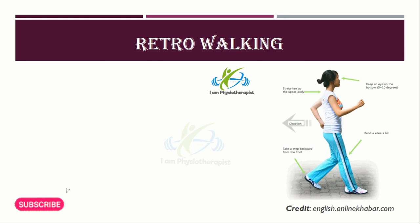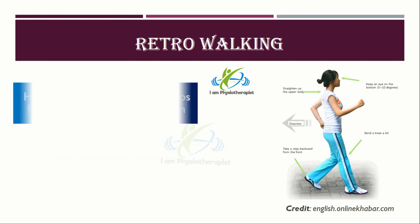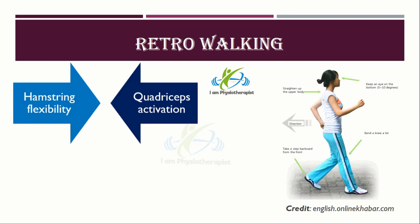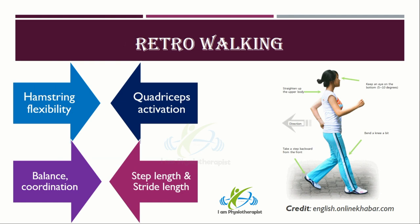Retro walking is a toe-to-heel pattern. Backward walking seems to reset the neuromuscular system, challenging your lower extremity muscles and joints in specific ways that may improve the gait. Forward walking is a heel-to-toe motion. The benefits of backward walking may include improved hamstring flexibility, improved quadriceps activation, improved balance, improved coordination, improved walking speed, and improved step length and stride length.